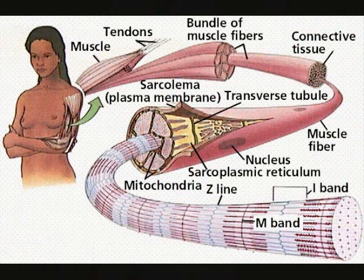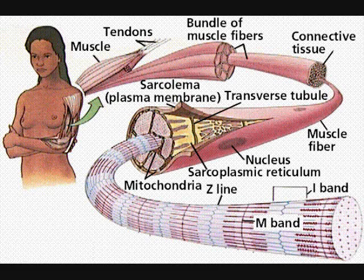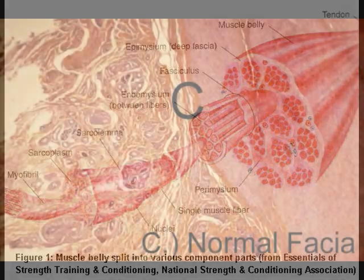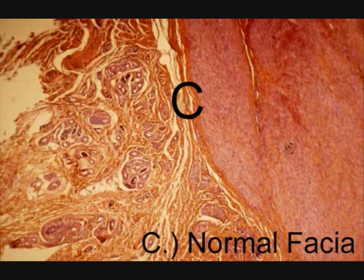Right now we will be talking about the skeletal muscle. The skeletal muscle makes up 40% of an adult body weight. It is composed of skeletal tissue, nervous, blood and other connective tissue. It is also called voluntary muscle. It is held in position by layers of dense connective tissue called fascia.